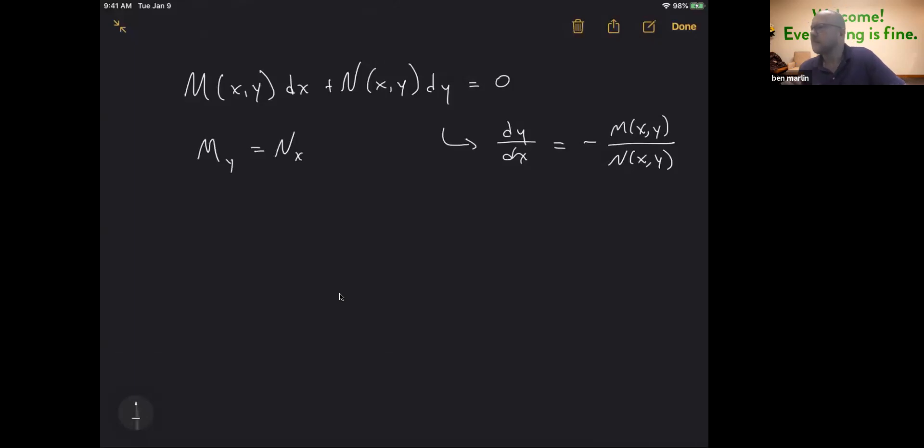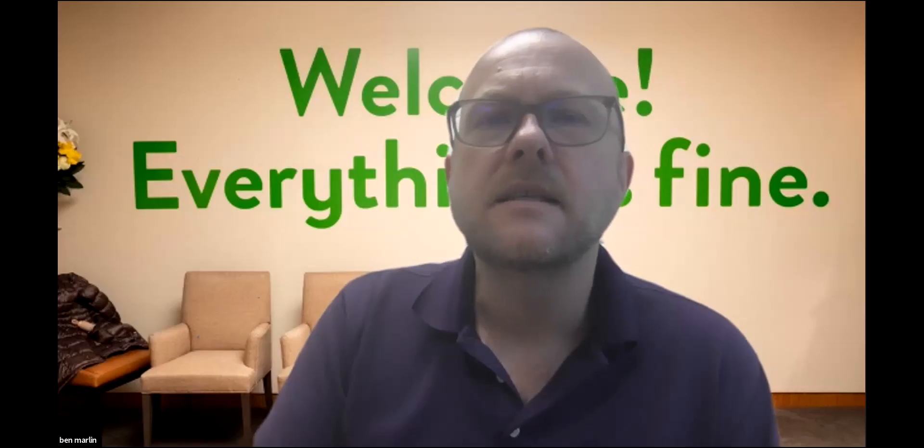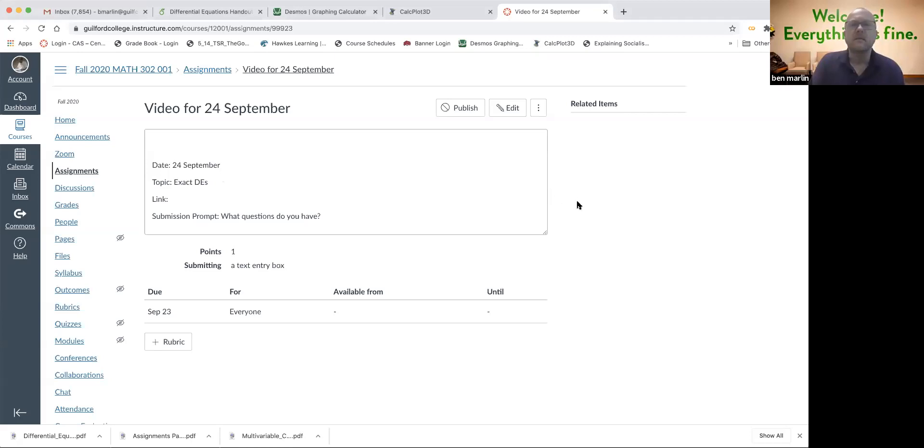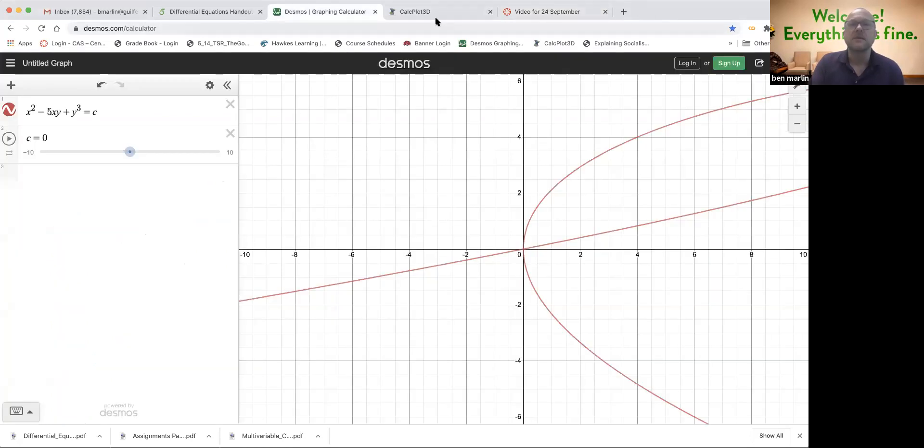So the motivating example we'll think about is x squared minus 5xy plus y cubed equals some constant. For those of you who've had calc 3, that is a function of two variables. And so you may be thinking about how to actually graph that. If you're like me, you're thinking, oh God, no, I don't want to graph that. But rather, I would like to get the computer to take care of that for me. By the way, the way I said that, that's how old men say something about computers.